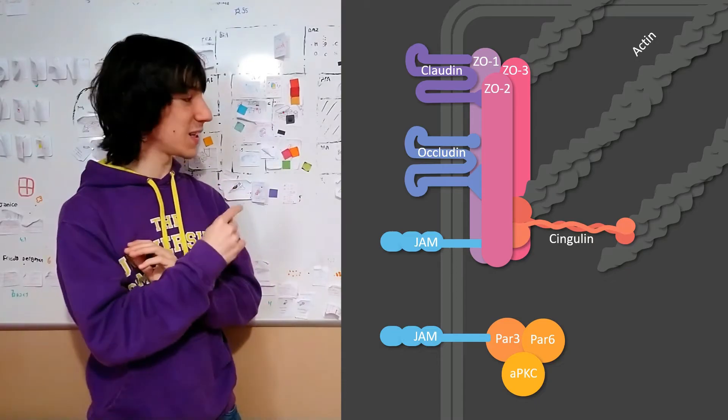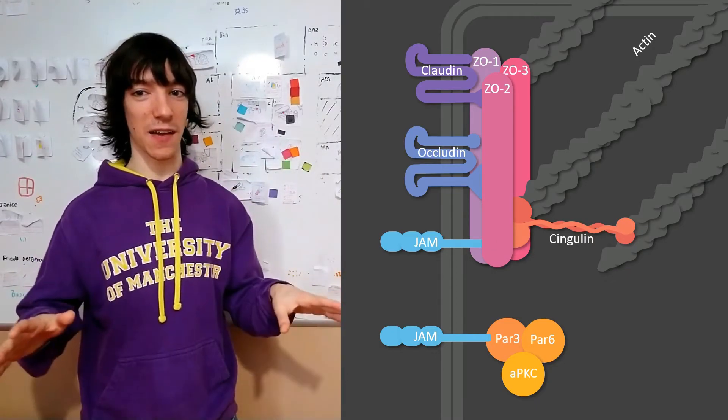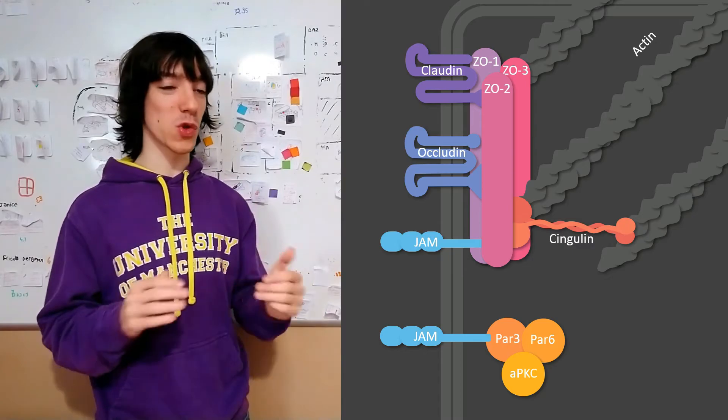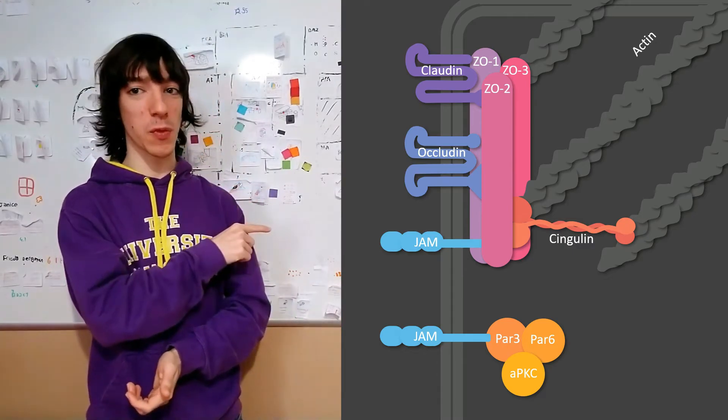Half or less of the cell has it, the rest of the cell doesn't have it. And one way to control where it is, is by making it bind to JAM proteins.